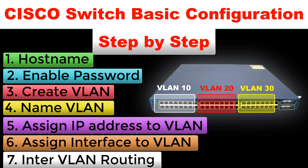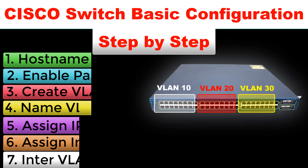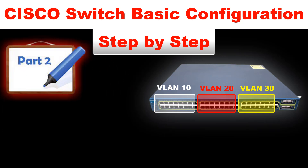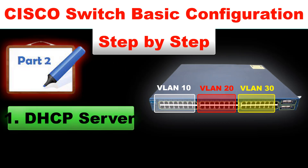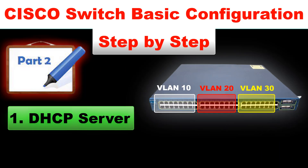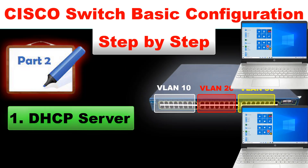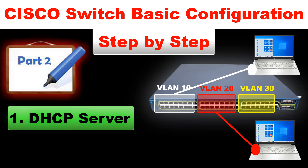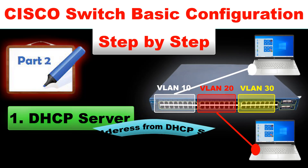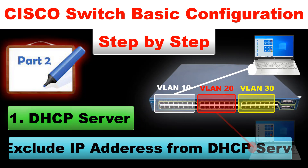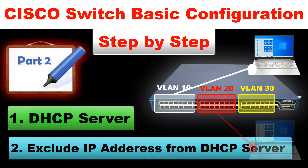We will continue the same setup. In this second video, I will show you how to configure the DHCP server for your VLANs, so your end devices will get IP addresses automatically. I will also show you how to exclude some IP addresses so they will not be assigned automatically to your PCs. So let's start.